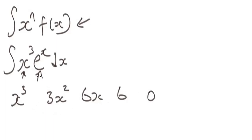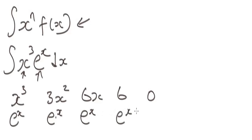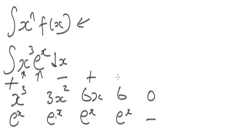When we integrate the exponential function eˣ we will still get back the same exponential function eˣ. The idea for the polynomial function is to keep differentiating until we reach zero. Now that we have done this, let's put in the alternating signs — plus, minus, plus, minus, plus — this is very important.